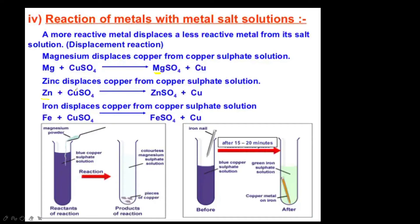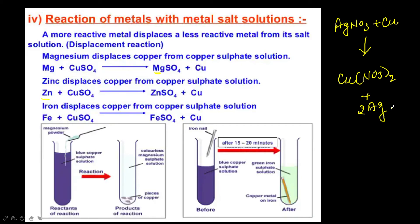Iron will also displace copper from copper sulfate solution — the more reactive metal displaces the less reactive metal. Another example: silver nitrate (AgNO₃) + copper (Cu) → Cu(NO₃)₂ + 2Ag. Silver nitrate is colorless; copper is added and forms a blue color copper nitrate solution, while silver — which is white — separates out.